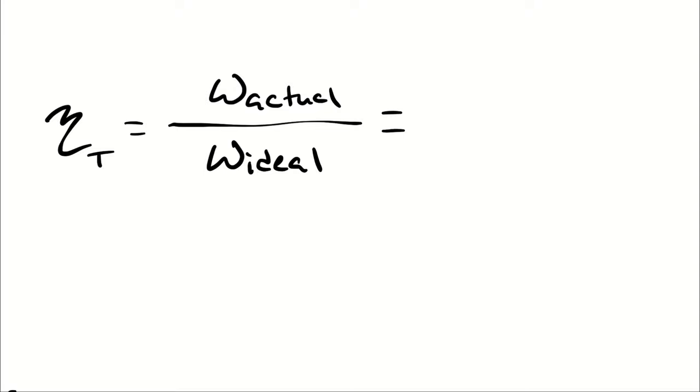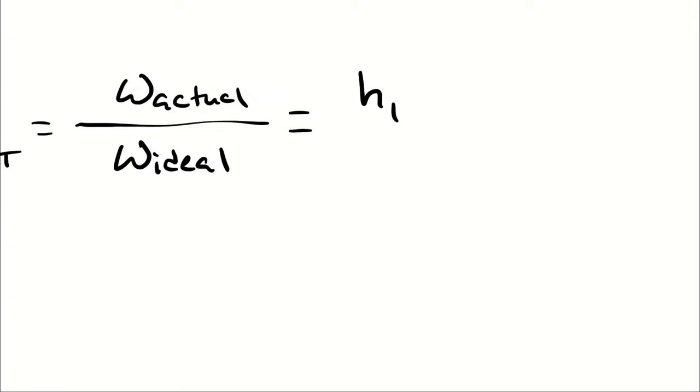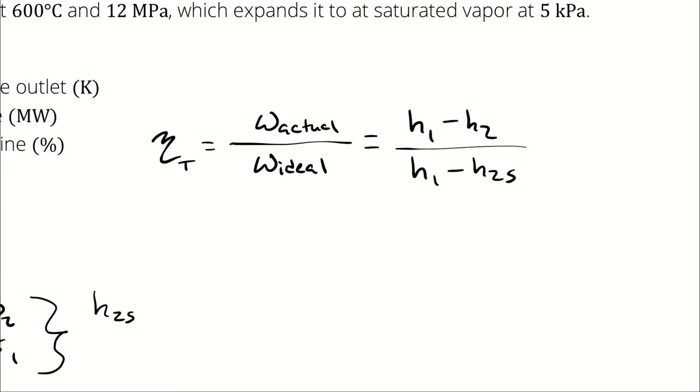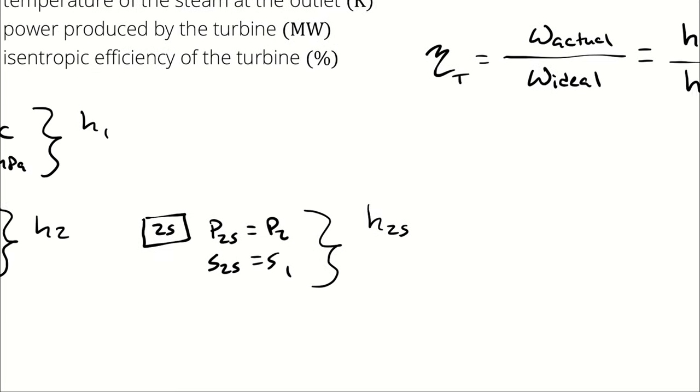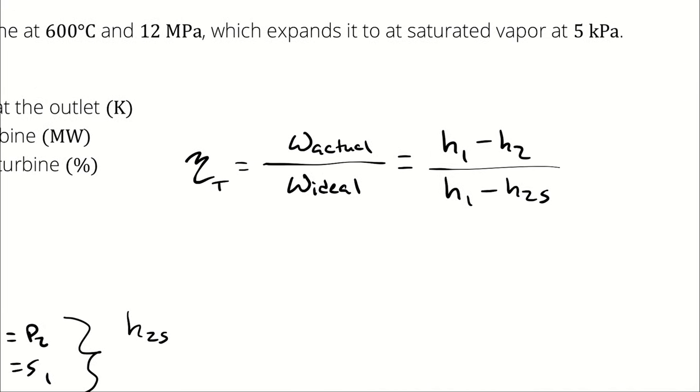From an energy balance on my turbine, for an adiabatic process, I can see that my specific work is going to simplify down to H1 minus H2. So I have H1 minus H2 divided by H1 minus H2s. So once I have all three enthalpies, I can determine the isentropic efficiency of the turbine.